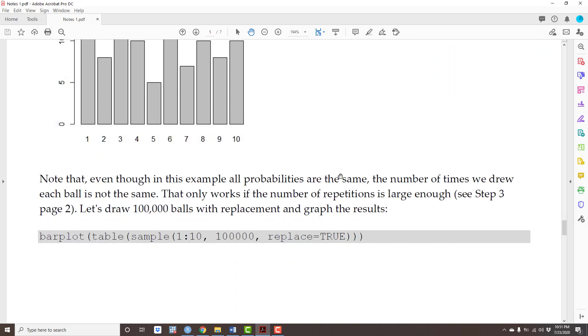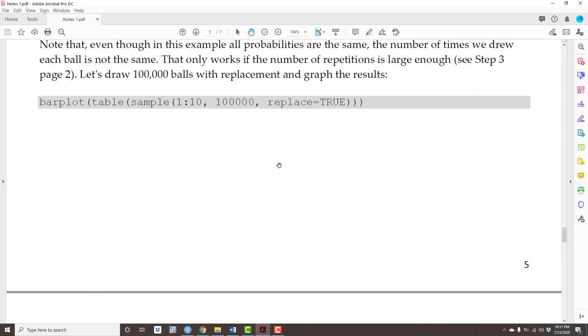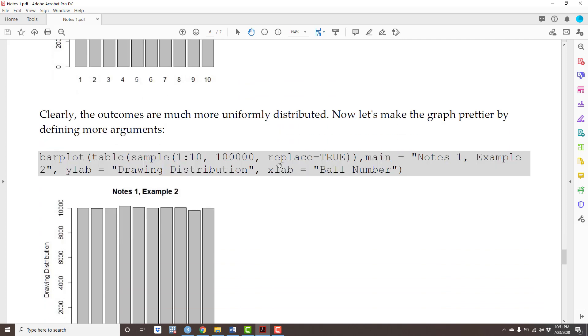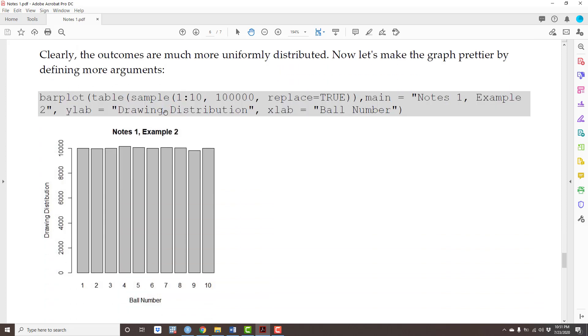Finally, since you are exploring the function barplot, let's give it more options. Basically, let's include more arguments in the function. The argument main tells R what is the title of your graph. In this case, notes 1, example 2. The argument YLab tells R what is the label of the vertical variable. In this case, drawing distribution.